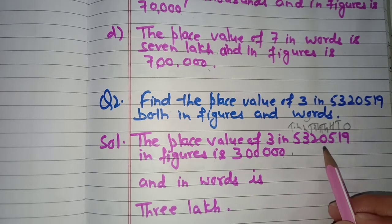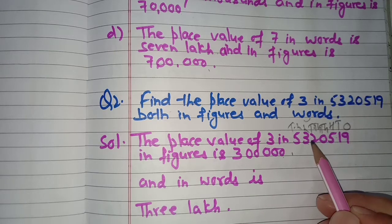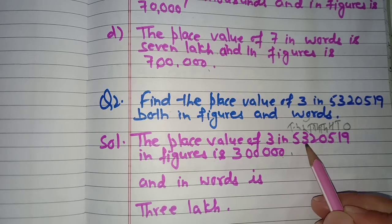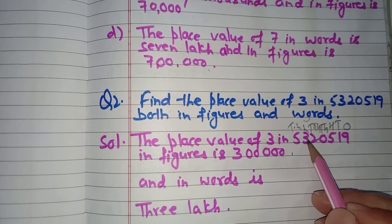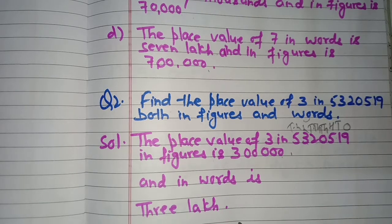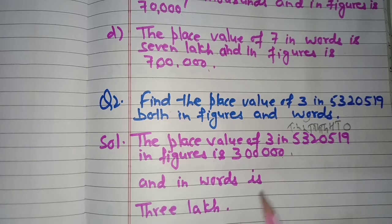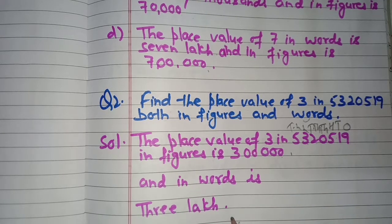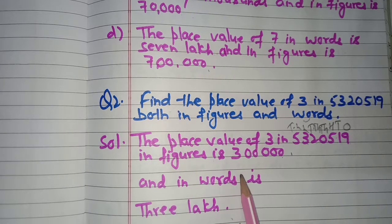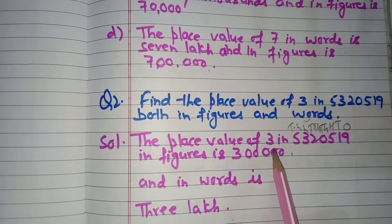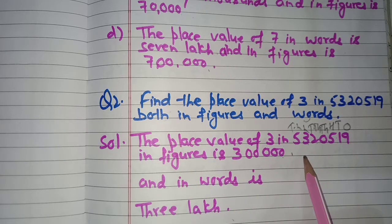Since 3 is under the Lakhs period, in words its place value is three lakh. This is how we write the place value of any digit — both in figures and in words — by identifying which place it occupies in the place value chart.